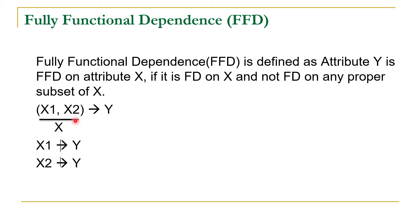So Y is functionally dependent on the combination X1 and X2, which is considered as X. Y is functionally dependent on X, but it is not functionally dependent on any subset of X. We have two subsets of X: X1 and X2, and Y should not be functionally dependent on these subsets.